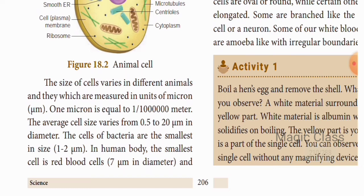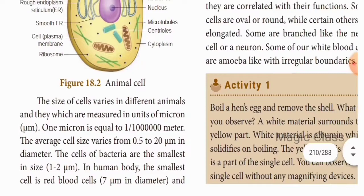The size of cells varies in different animals and they are measured in units of micron (μm). One micron is equal to one by ten lakh meters. The average cell size varies from 0.5 to 20 μm in diameter. The smallest bacterium is 1 to 2 μm. In the human body, the smallest cell is the red blood cell (RBC) at 7 μm in diameter, and the longest cell is the nerve cell.